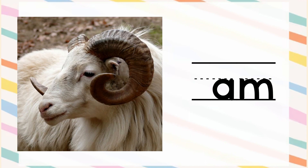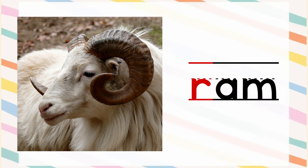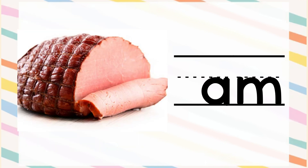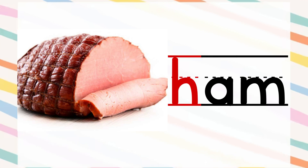Here the picture is of a ram. The sound of letter R is 'r', and AM becomes 'am' — ram! And the last picture is of ham. The sound of letter H is 'h', and AM becomes 'am'. So when we read it together it becomes: H - am - ham!